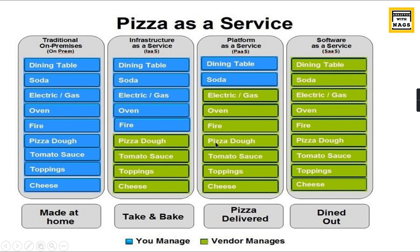Then you decide you don't want to do even the preparation — you buy everything including the making of it from a vendor. Someone does the cooking for you and you pay for it. You just use your dining table and have your pizza. This is what Platform as a Service is.